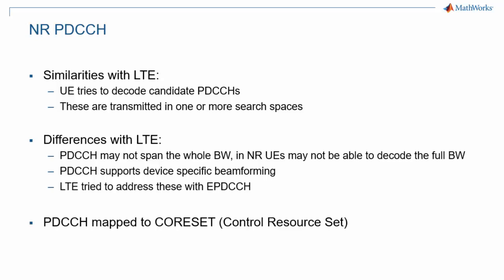First, the PDCCH may not span the complete 5G bandwidth, whereas in LTE, it always does. This is important because the bandwidth may be much larger, up to 400 MHz in 5G, and UEs in 5G are not required to support a large bandwidth, opening the door to simpler, cheaper devices.